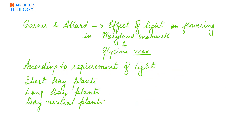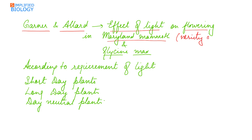Garner and Allard first reported the effect of light on flowering in Maryland Mammoth, which is a variety of tobacco, and in Glycine max, which is soya bean.